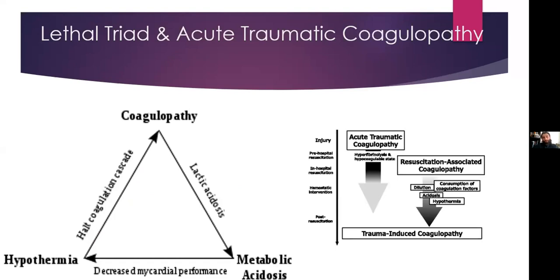Next, the lethal triad of trauma — again, an ATLS topic. The three components are hypothermia, coagulopathy, and metabolic acidosis. This triad creates a vicious cycle: once the patient is in this death spiral, it's very difficult to get them out. We're all familiar with dilutional coagulopathy — if we give too much fluids, we dilute out clotting factors. However, there's a newer concept called acute traumatic coagulopathy, which is very important to recognize because it happens very early in trauma.